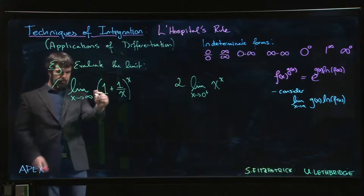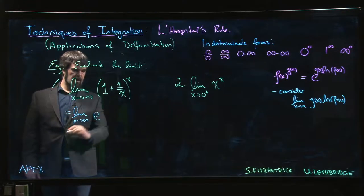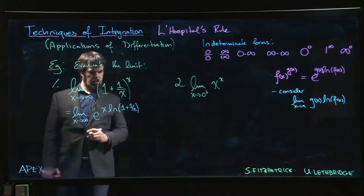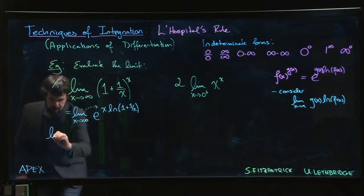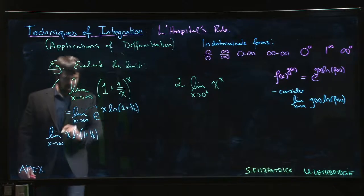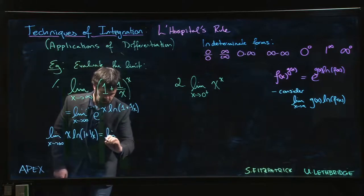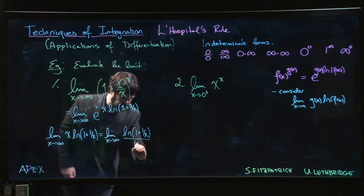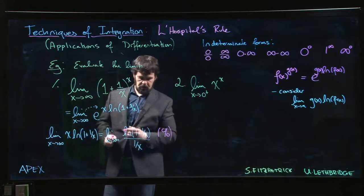For the first example, we rewrite the limit as x goes to infinity of e to the x·log(1 + 1/x). We bring the limit up into the exponent and consider the limit as x goes to infinity of x times log(1 + 1/x). This is an infinity times zero limit, so we rewrite it: keep the log on top and divide by 1/x on the bottom. This is now a zero over zero limit, so L'Hôpital's rule applies.